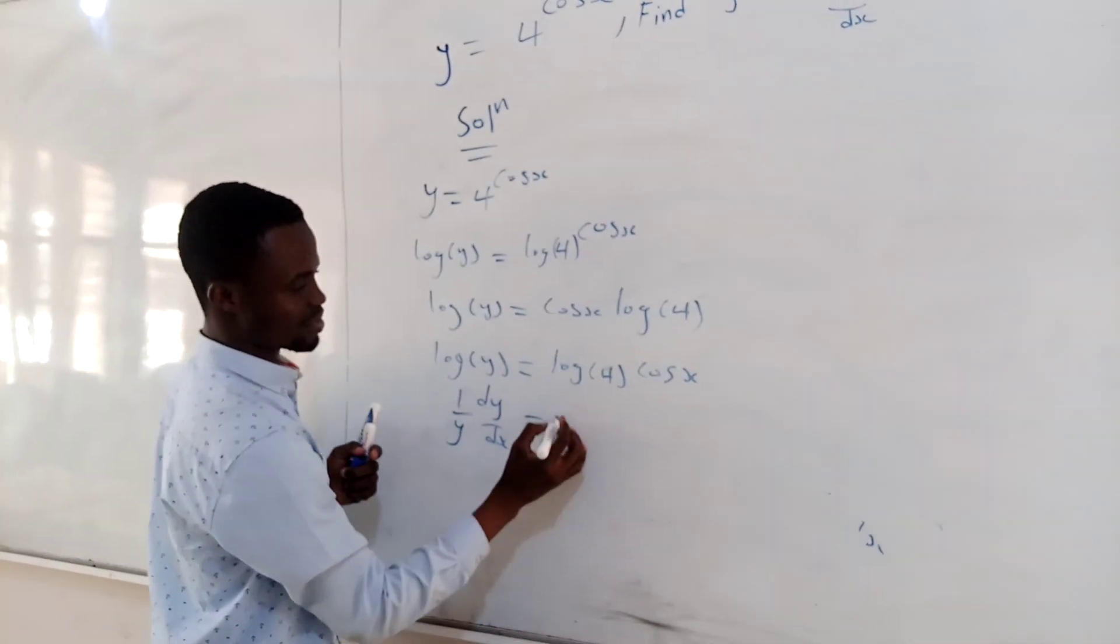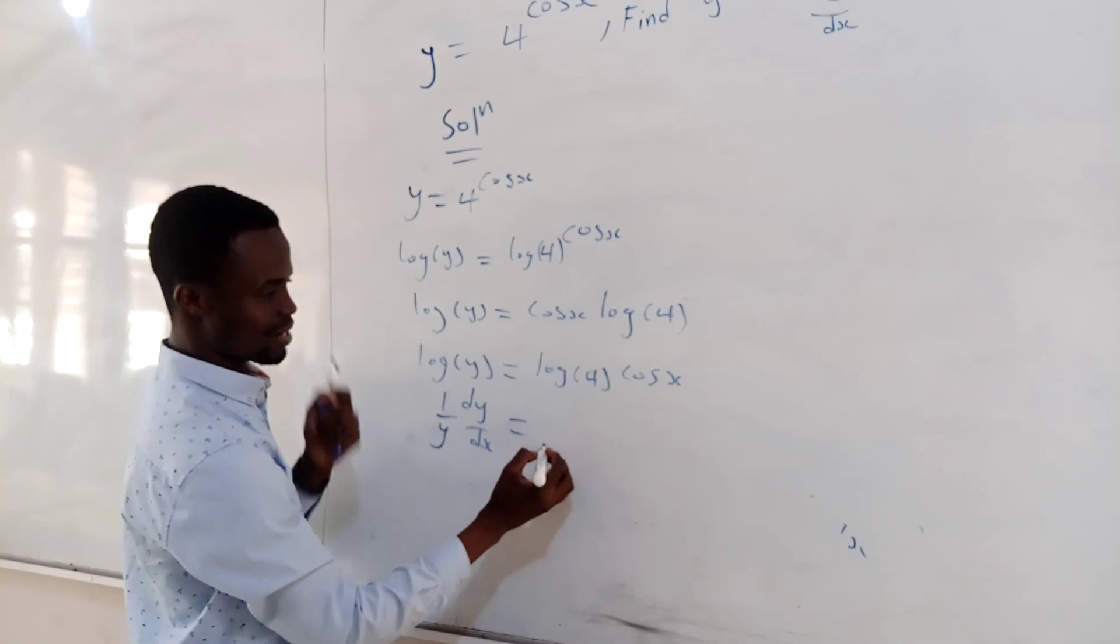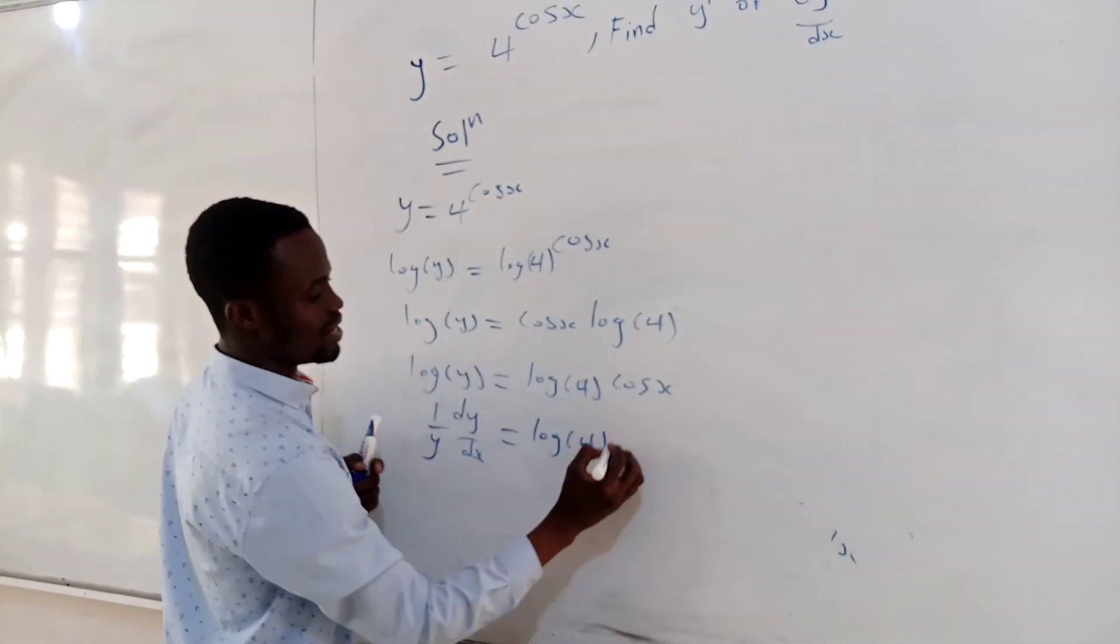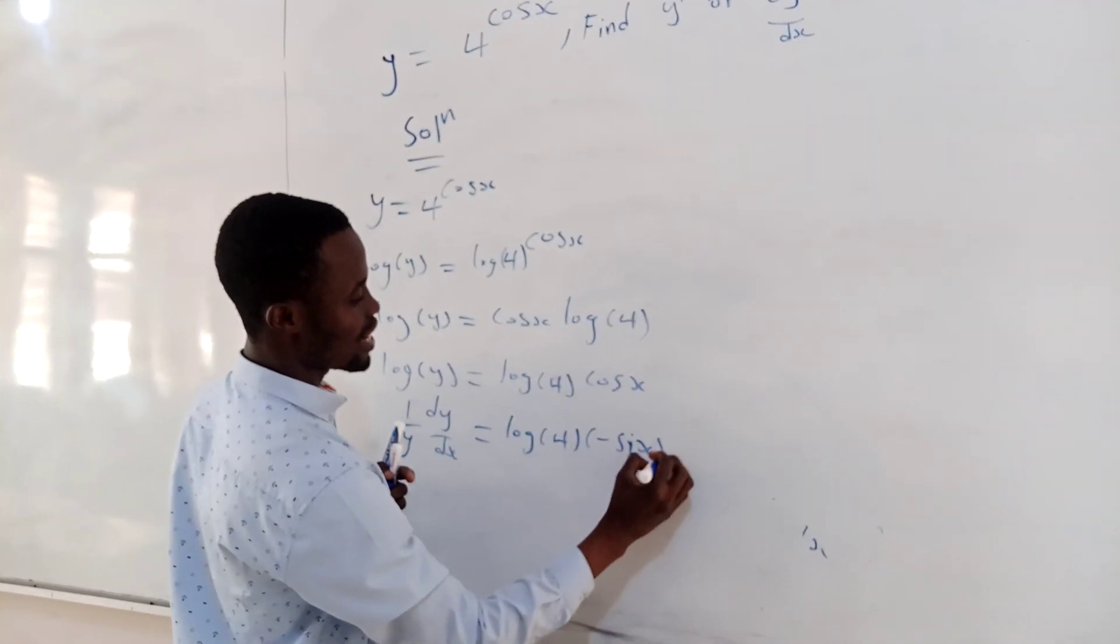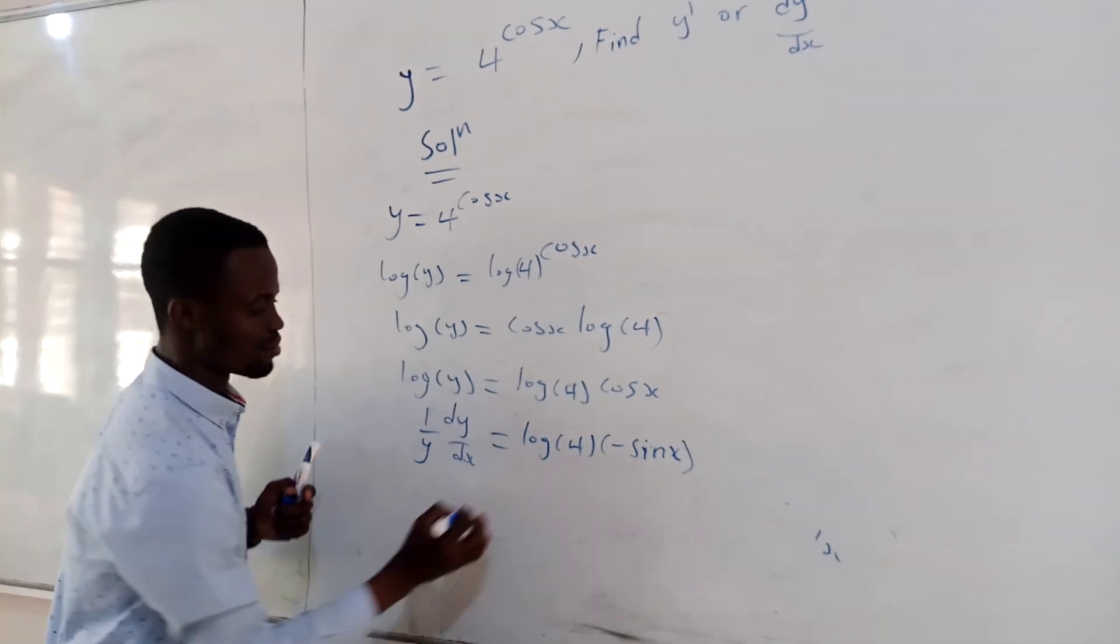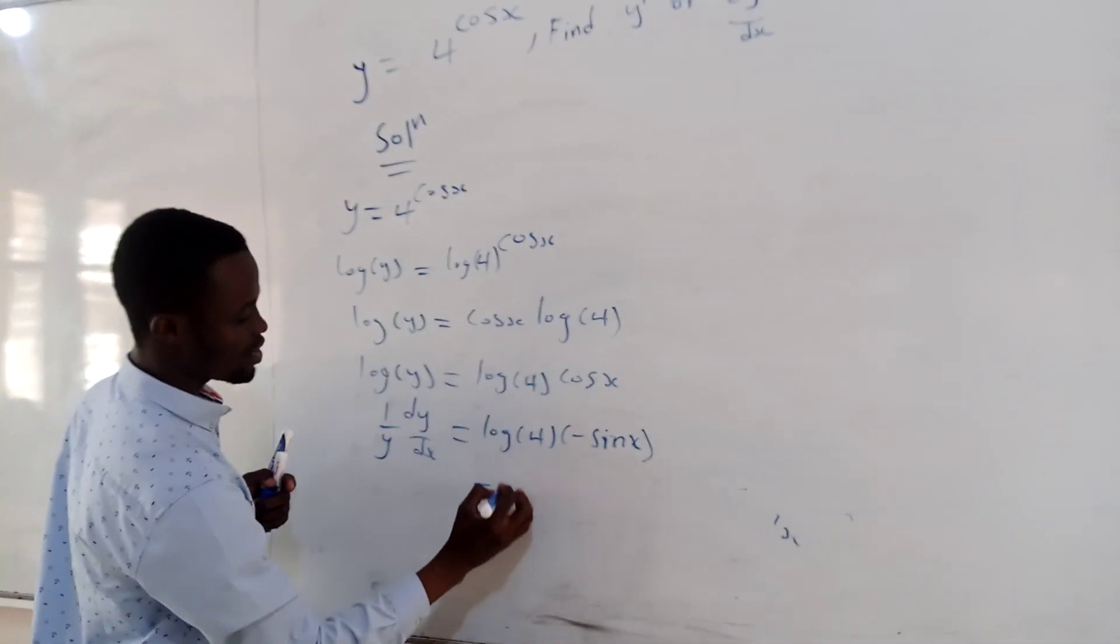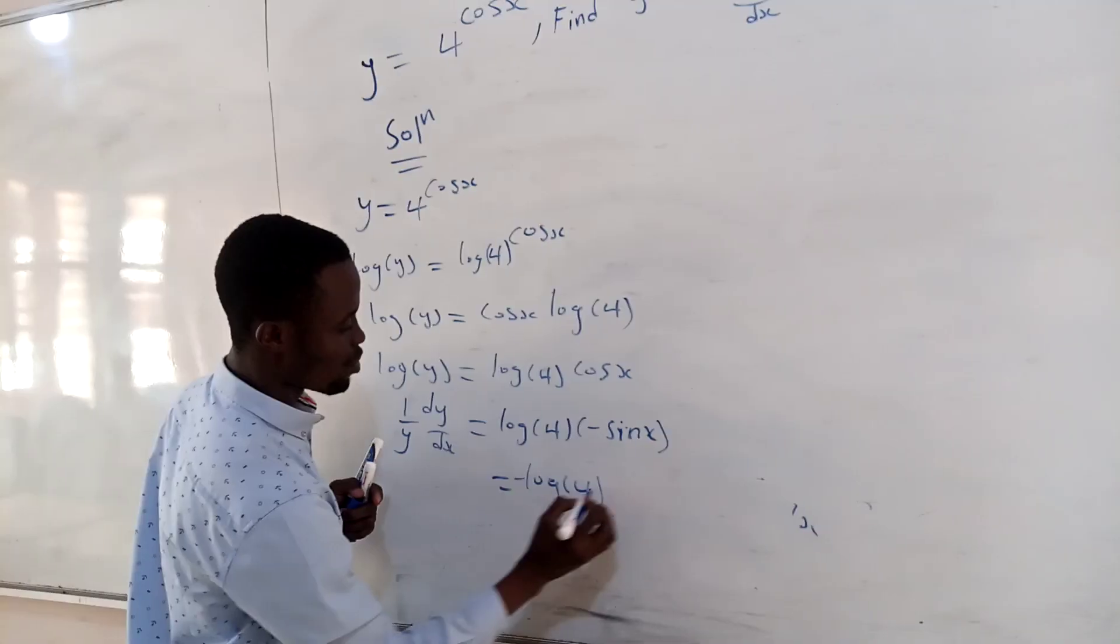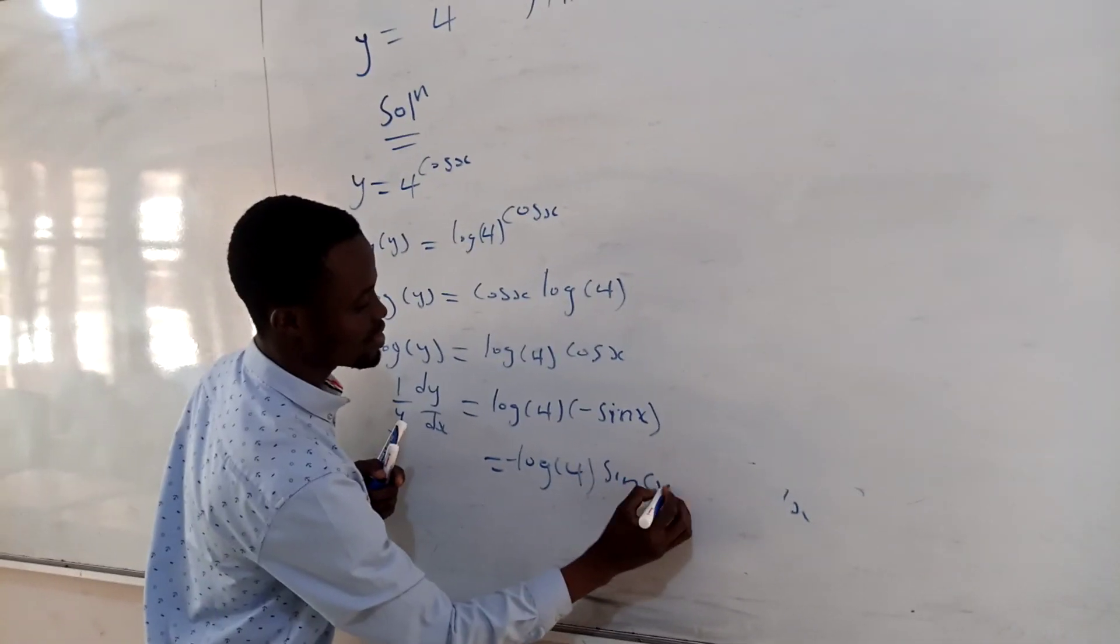Which is equal to, then you differentiate cos, you get negative sin. So you are going to get log 4, then negative sin x. Okay, which is the same as negative log 4, then sin x.